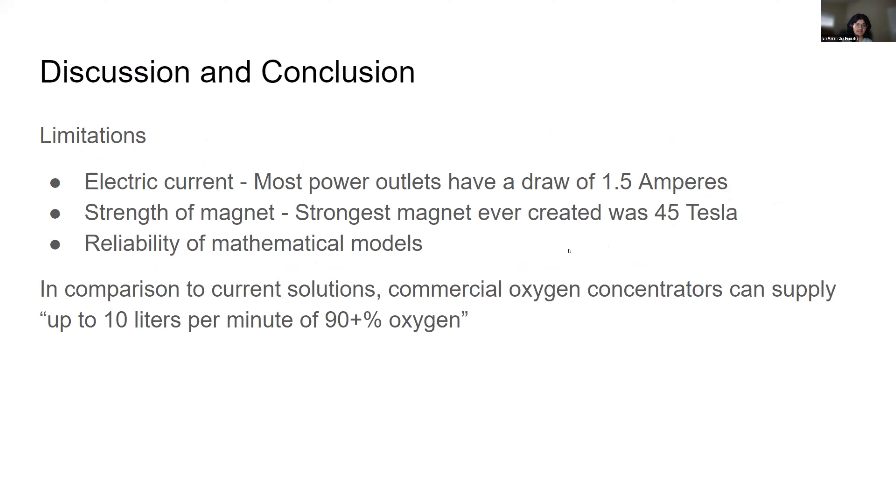As we mentioned previously, there are plenty of limitations to our design, especially when you consider that the strongest magnet ever created was 45 tesla. Even if we had a magnet of 40 tesla, the ratio would be 1.6 of magnetized air to unmagnetized air. We would probably need to determine more reliable mathematical models through actual experimentation rather than through research.